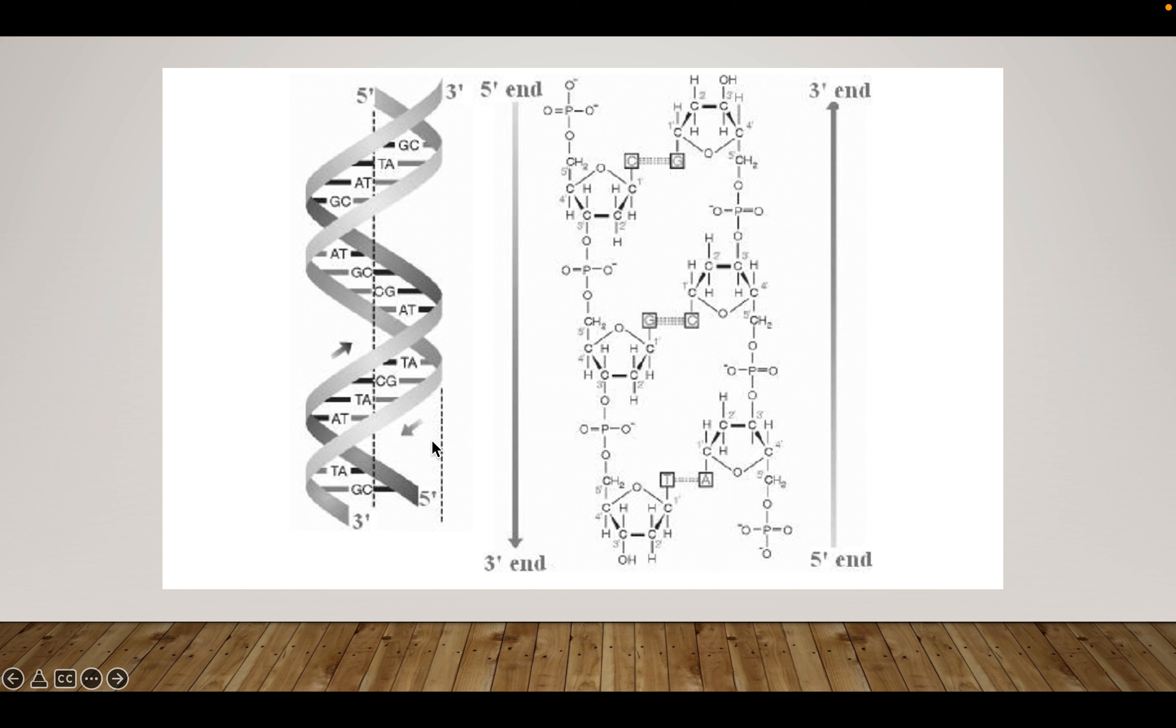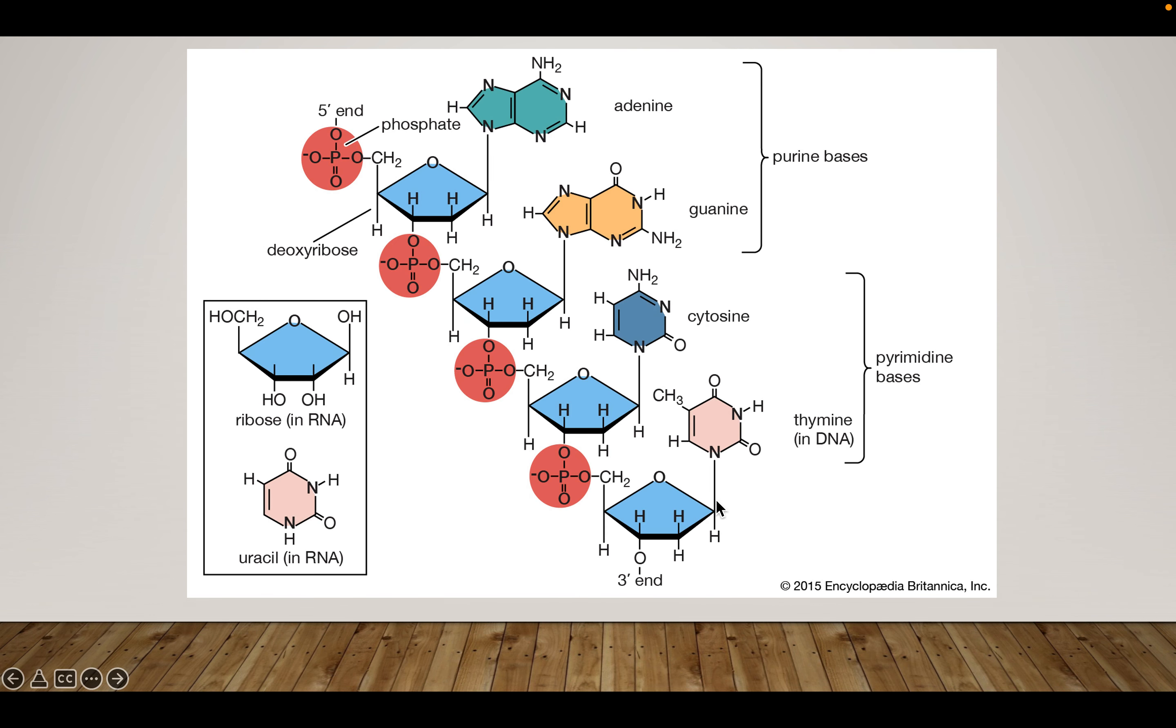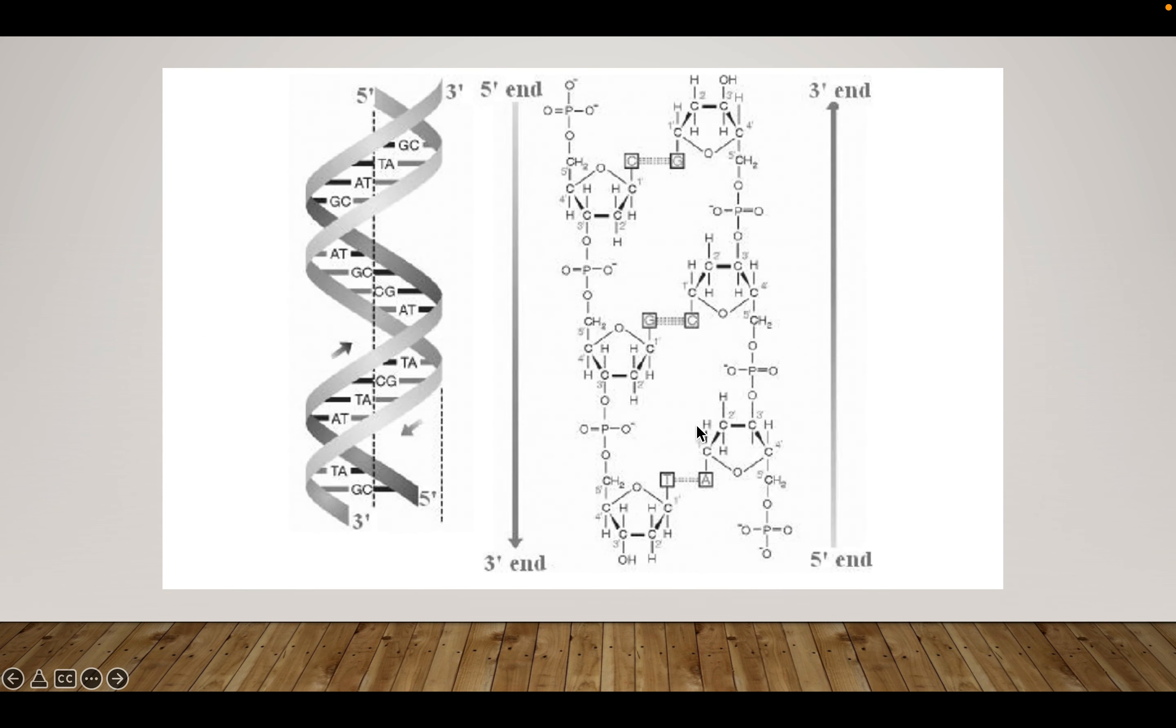And so what you have are two ends. You have a five end and a three end, or a five prime end and a three prime end. And so how we were counting the carbons earlier, here you have a one prime, two prime, three, four, and five.